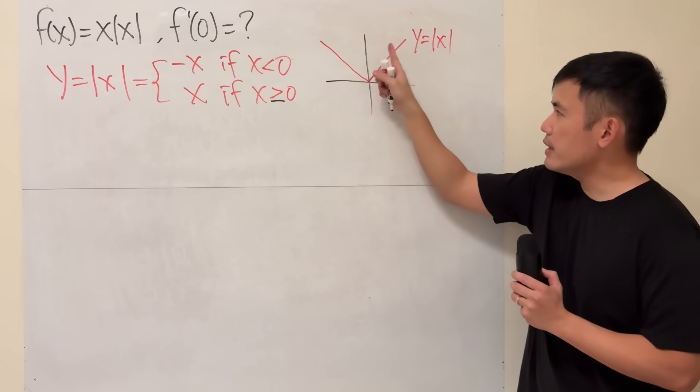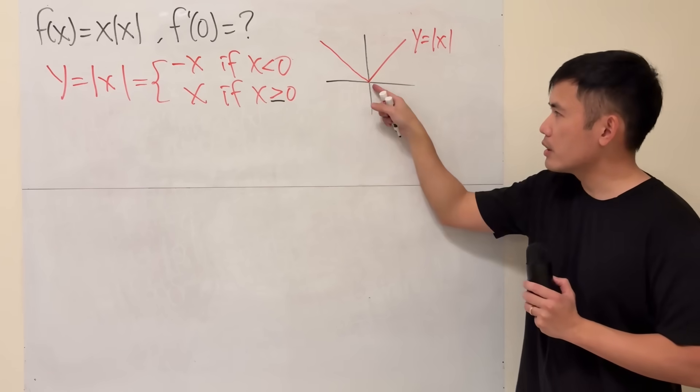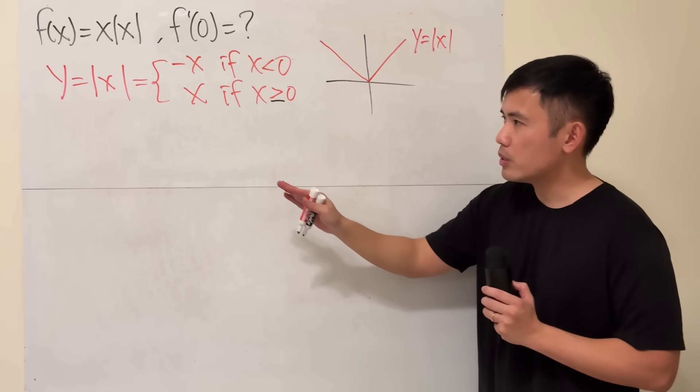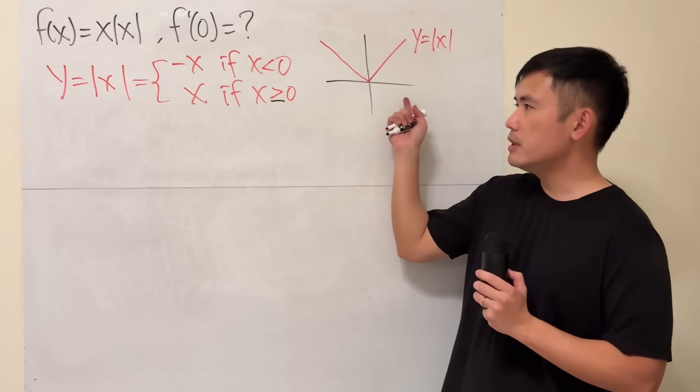Now, when you look at the graph, you see that we have a corner here. It's not differentiable right here at the corner. So, this is not always differentiable. So the derivative of this is not continuous.